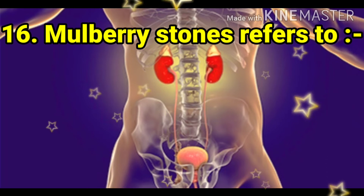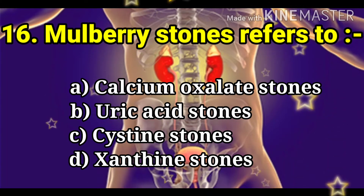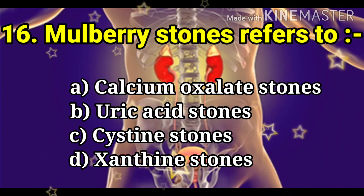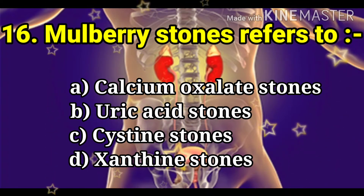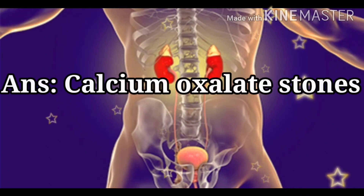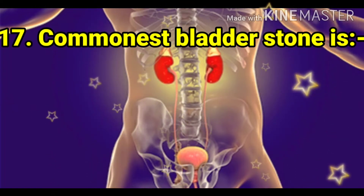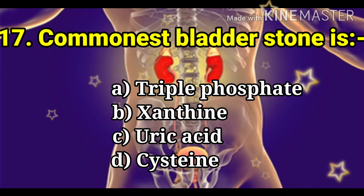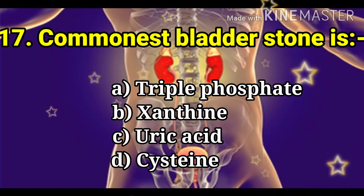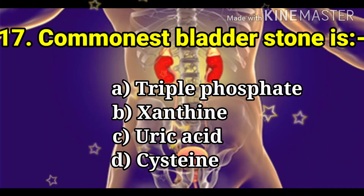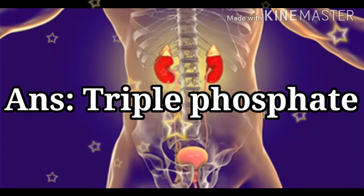Next question: mulberry stones refer to which type? The options are calcium oxalate stones, uric acid stones, cysteine stones, and struvite stones. The answer is calcium oxalate stones. The next question: the commonest bladder stone. The options are triple phosphate, struvite, uric acid, and cysteine. The answer is triple phosphate stone.